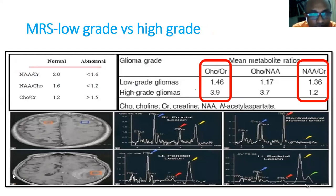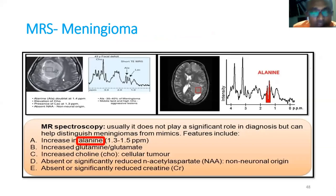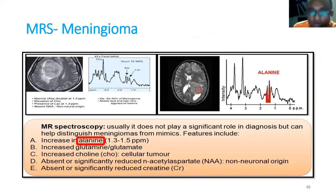For low-grade gliomas, the choline-to-creatine ratio is around 1.46 and NAA is high. For high-grade gliomas, the choline-to-creatine ratio is around 3.9 and NAA is very low. When you ask for MRS, they will provide a normal background spectrum and the tumor spectrum — you just compare them. For meningioma versus meningioma-mimicking tumors, you can ask for alanine MRS: an increase in alanine helps differentiate meningioma from mimicking tumors.